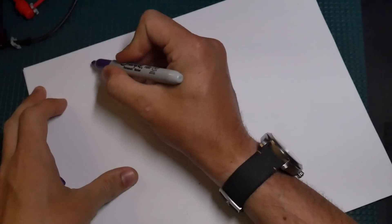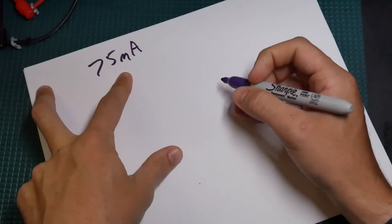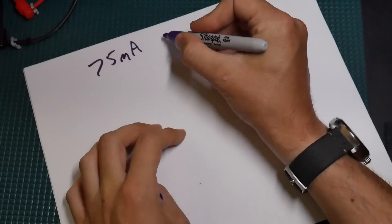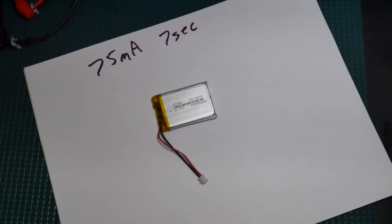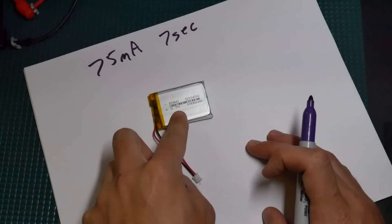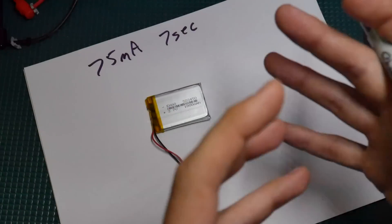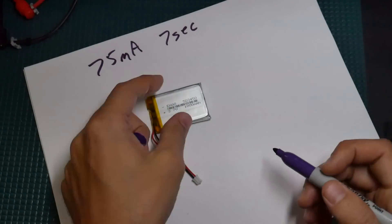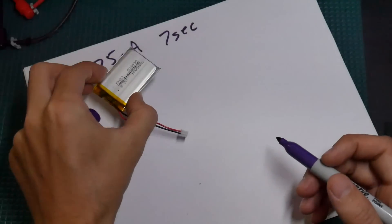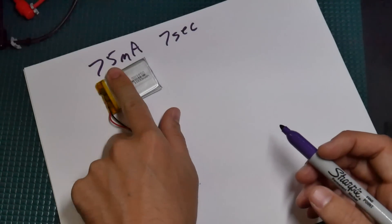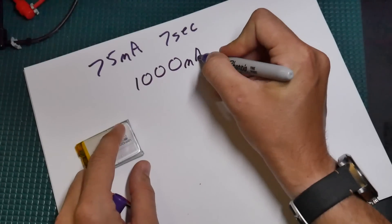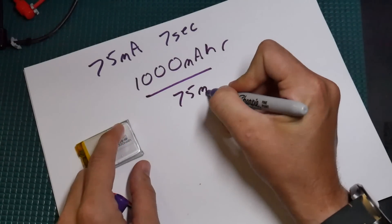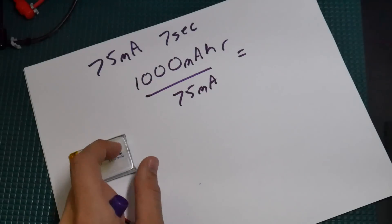We've got that 75 milliamps when it wakes up and it's on for 7 seconds. So the question might be: I've got this 1000 milliamp hour battery, how many wakes can we get from this battery? A quick and easy way of doing this is just figure out how long this battery could run a 75 milliamp load.